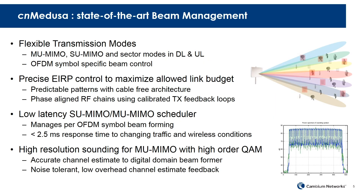CN Medusa comprises four components. The first is the flexible transmission modes. There are three types: the sector mode, used for broadcast transmissions; the single-user MIMO mode, used for beam-formed transmissions to a single user; and the multi-user MIMO mode, used to communicate simultaneously with multiple users. Each of these three types has a downlink and an uplink variant, and these modes can be applied flexibly on a per OFDM symbol basis. A given OFDM symbol could be a broadcast transmission and the following could be a multi-user MIMO transmission. The transmission mode transition occurs in the cyclic prefix of the normal OFDM transmission, with no incremental overhead associated with a mode change.